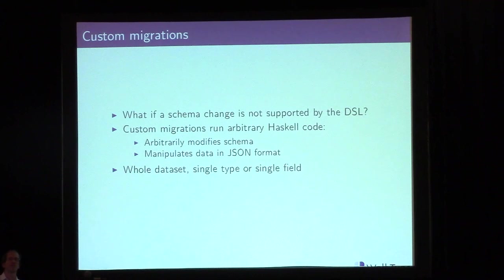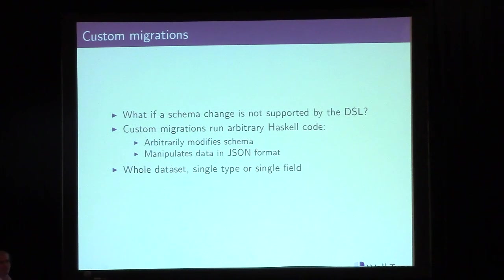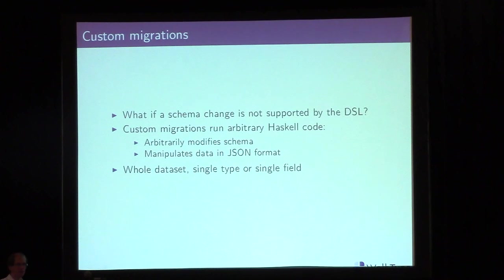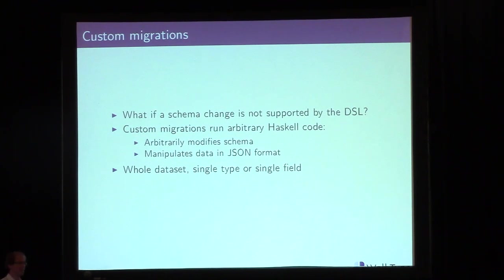When the migration language doesn't capture everything needed, we have the ability to run arbitrary Haskell code that manipulates JSON objects in order to make changes that otherwise wouldn't be possible. That might mean running a migration over the entire dataset, or writing Haskell code that modifies one particular field and having it automatically apply over all occurrences of that field anywhere in the dataset.